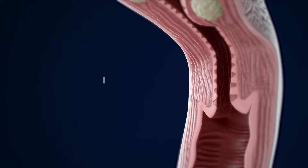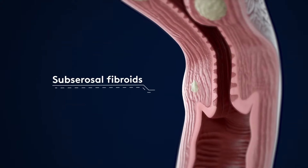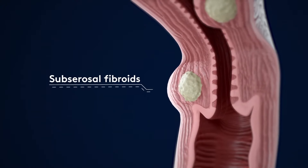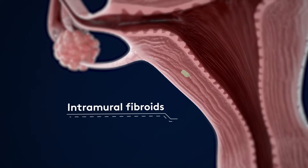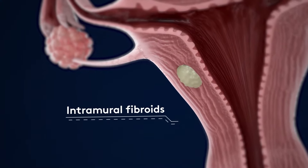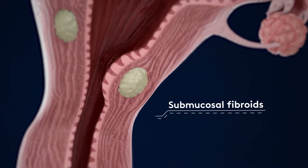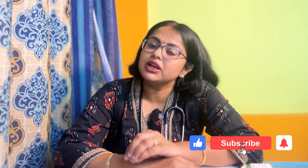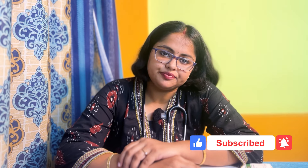Grossly, we can divide fibroids based on their location. One type is submucosal fibroids, which grow beneath the inner lining of the uterus.